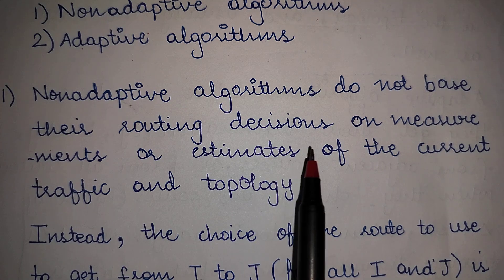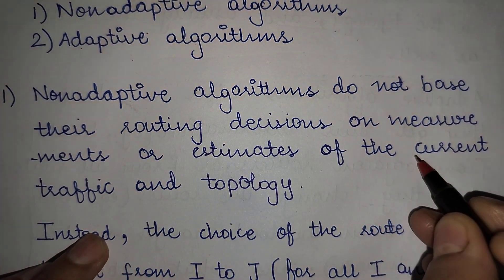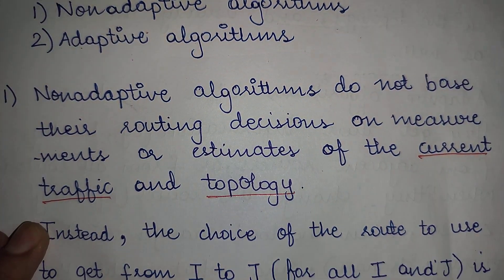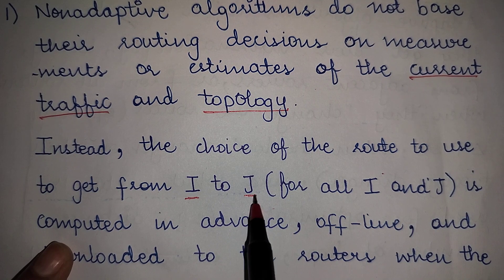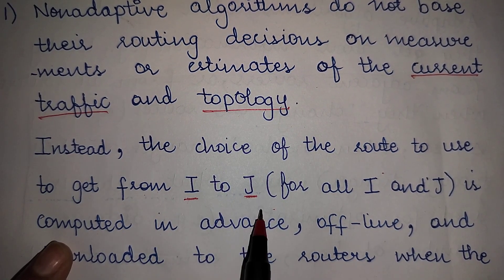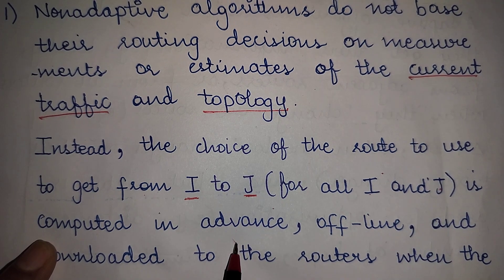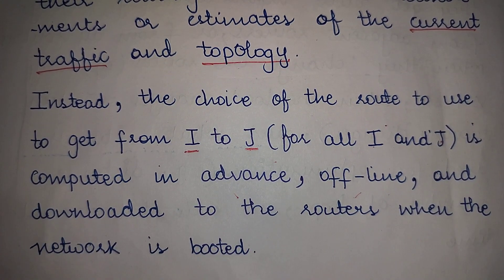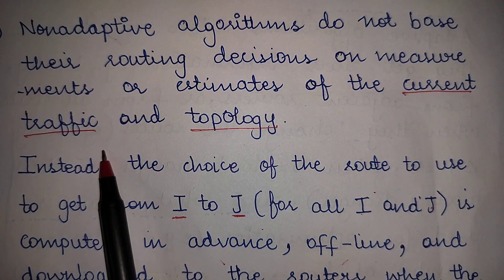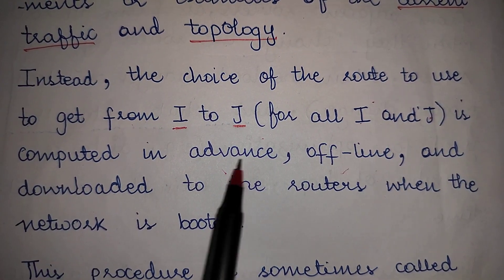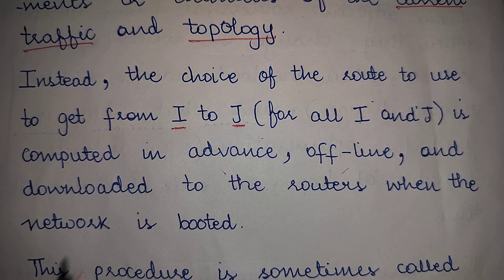Non-adaptive routing algorithms do not base their routing decisions on measurements or estimates of the current traffic and topology. Instead, the choice of the route to get from node i to node j — for any source to any destination — is computed in advance offline and downloaded to the routers when the network is booted. So you do not make the routing decision based on current traffic conditions or network topology.